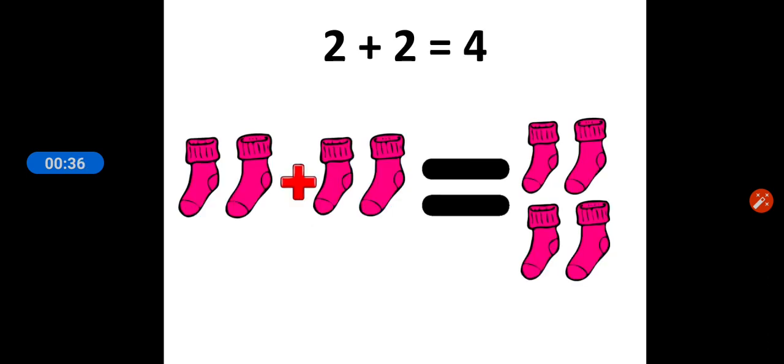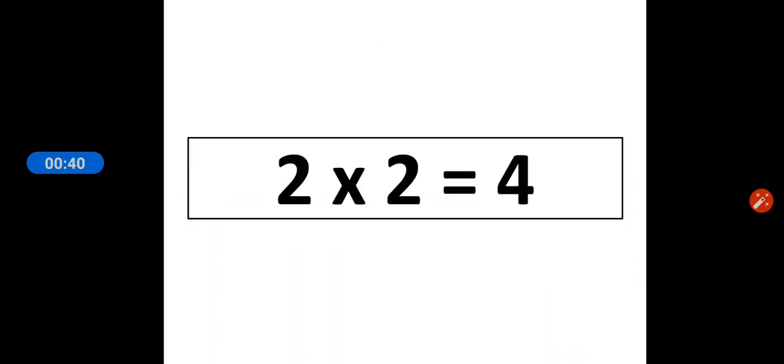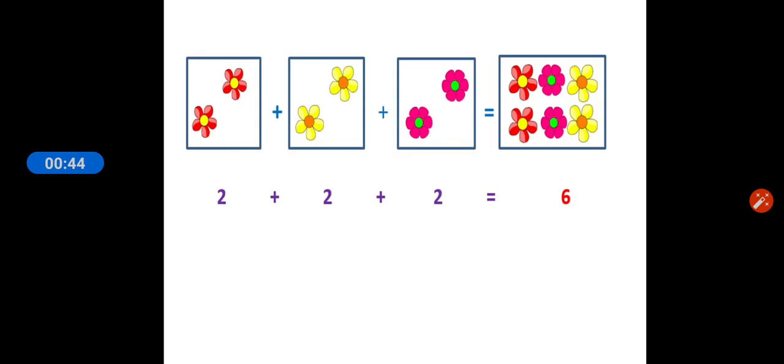When we have two pairs of socks, two plus two is equal to four, and for the table of two we will write as two twos are four.